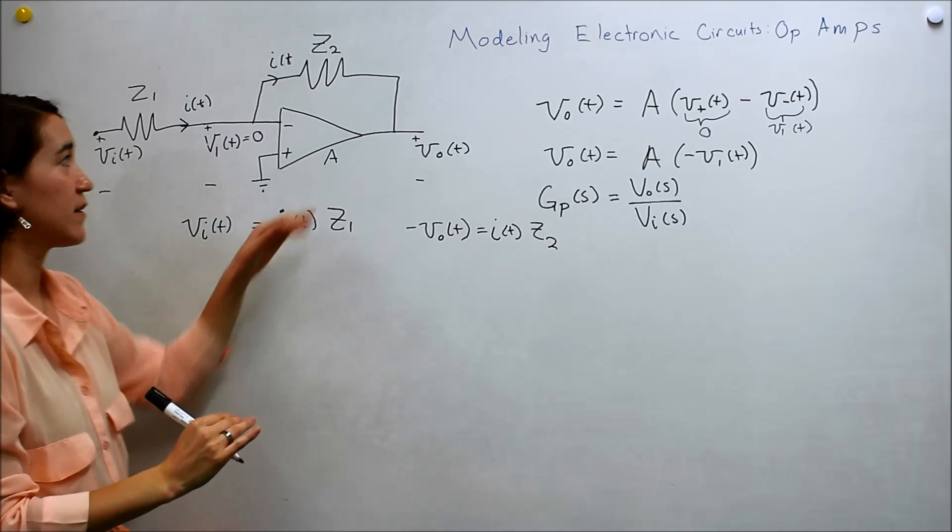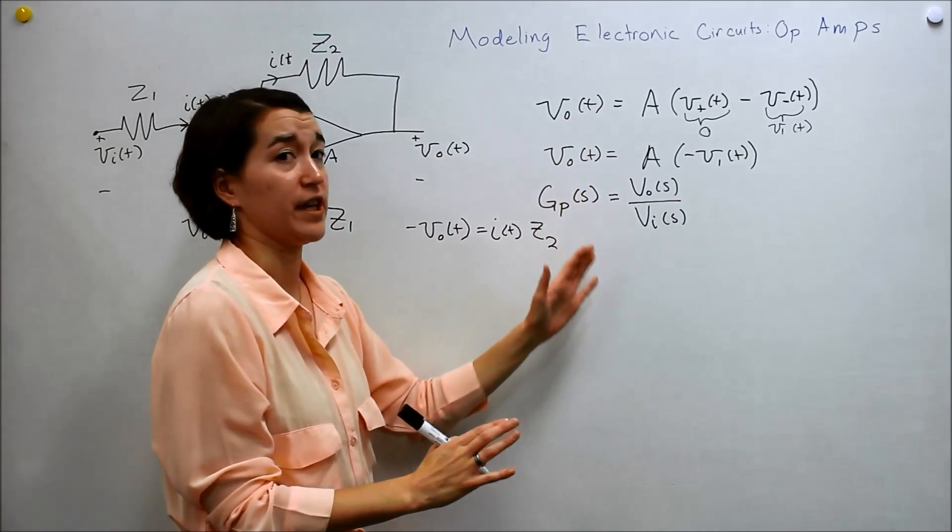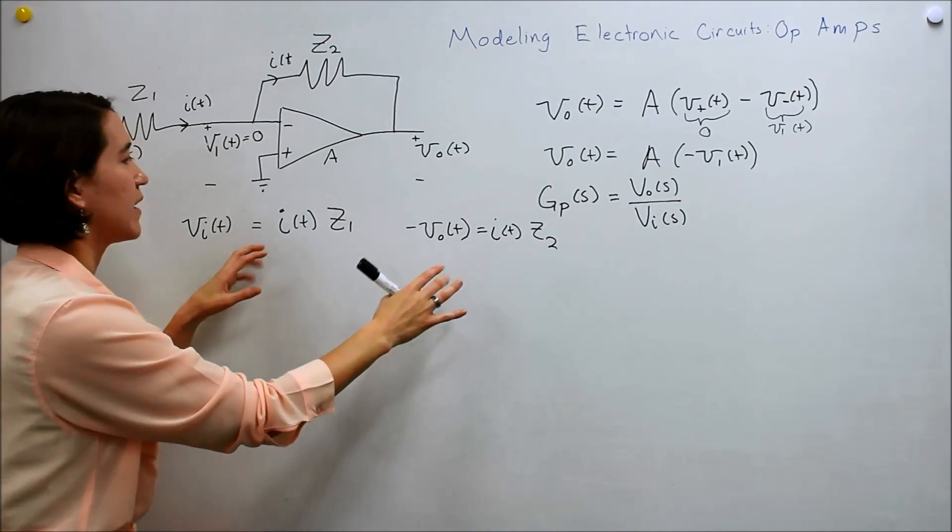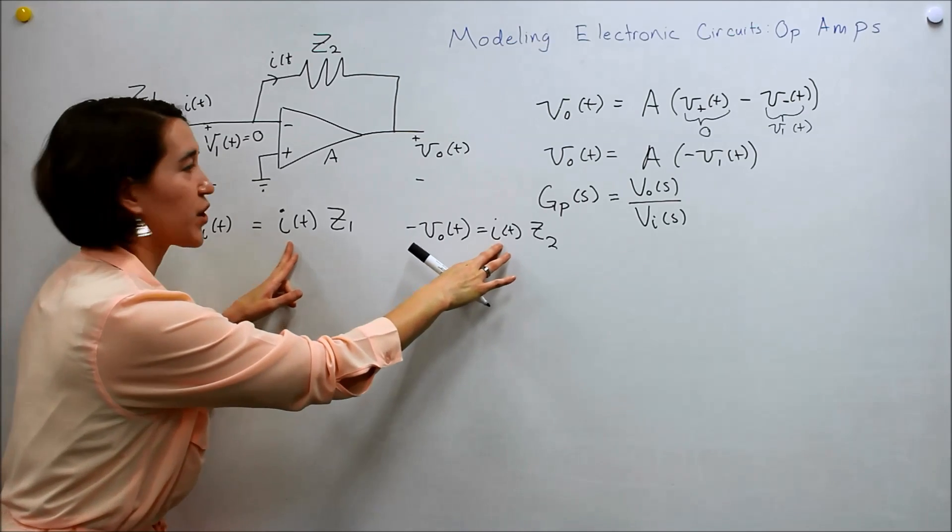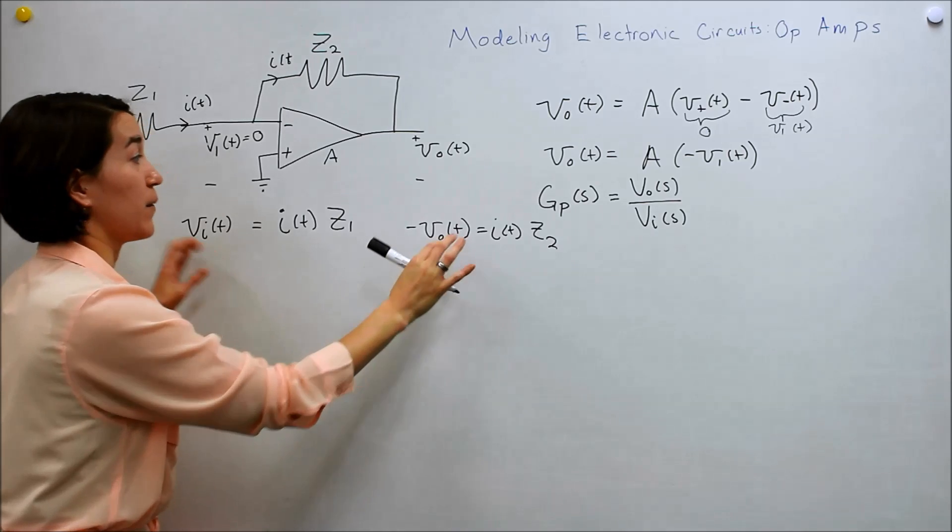So we want to make one single expression for this system. And we want it to be only in terms of V out and V in. Well, we notice that these two equations, if we equate the two currents, it will get rid of the currents and leave only V in and V out. So let's do that.